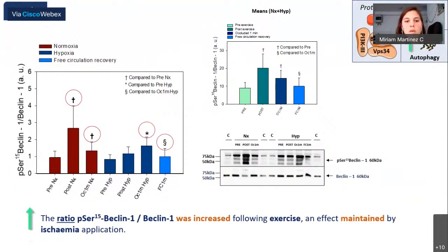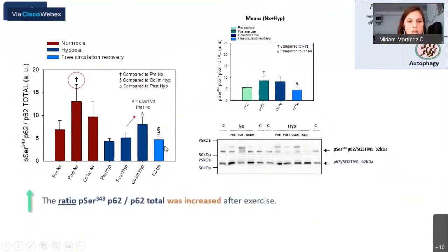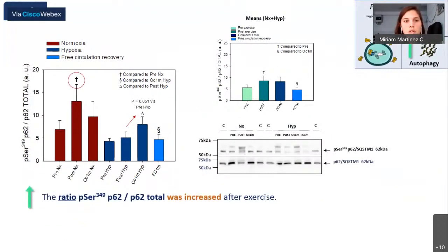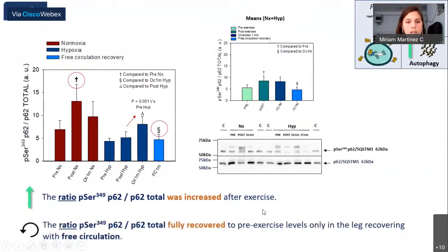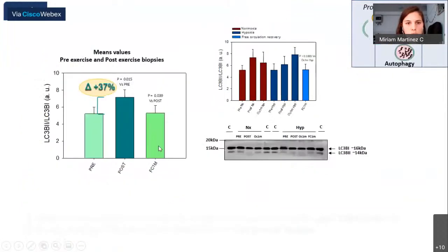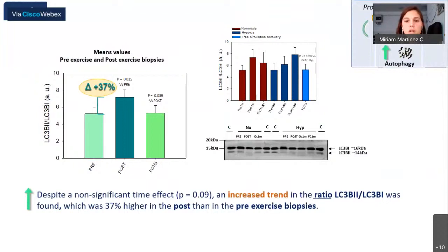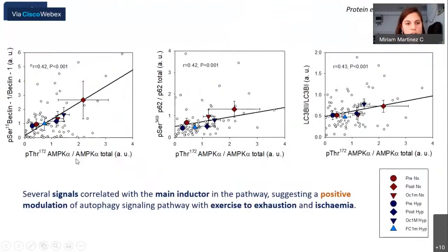In the non-occluded leg, ATP levels were largely restored after one minute and there was resynthesis of phosphocreatine. Regarding protein expression, the ratio of the main inducer of the autophagic pathway — AMPK — was increased after incremental exercise and maintained during occlusion. This was followed by an increase in phosphorylated-to-total Beclin-1 after exercise, an effect maintained by ischemia application but not in the leg recovering with free circulation. The ratio of phosphorylated-to-total P62 was increased only after exercise and was fully recalled to pre-exercise levels only in the leg recovering with free circulation. An increased ratio of LC3B-II to LC3B-I was found, higher in post- than pre-exercise biopsies. Several signals correlated with AMPK, suggesting positive modulation of autophagic signaling with exercise to exhaustion and ischemia.